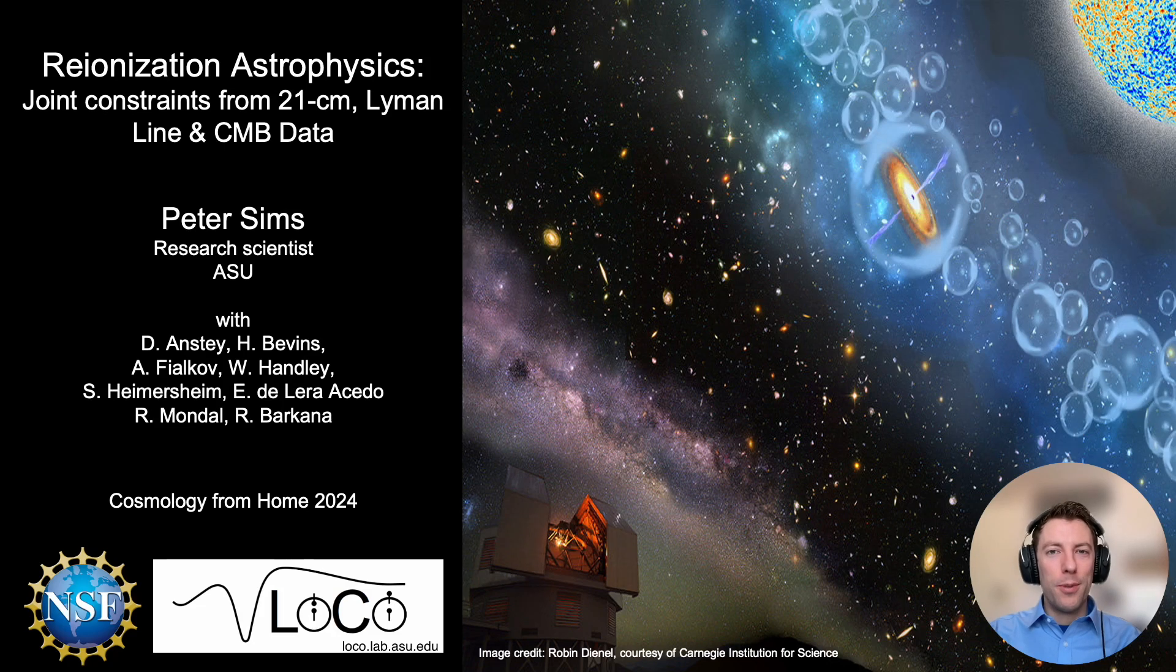Hi everyone, thank you to the Cosmology from Home organizers for the opportunity to give this talk. My name is Peter Sims, I'm a research scientist in the Low Frequency Cosmology Lab at ASU and today I'm going to talk about deriving constraints on astrophysics during the epoch of reionization via a joint analysis of 21 centimeter, Lyman line and CMB datasets. This work was done in collaboration with several other researchers in the radio experiment for analysis of cosmic hydrogen and elsewhere, who I've listed here on the title slide.